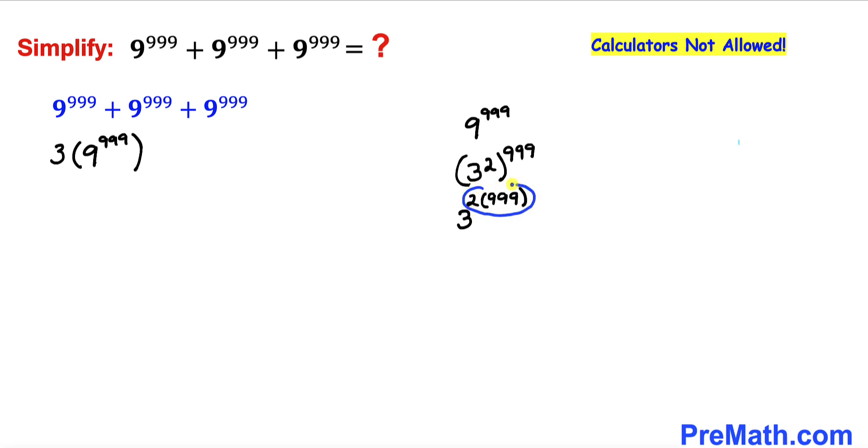Now let's focus on this part 2×999 and here I have copied it down. Let me show you how you can multiply it without using a calculator. We can write this 999 as 1,000 - 1.